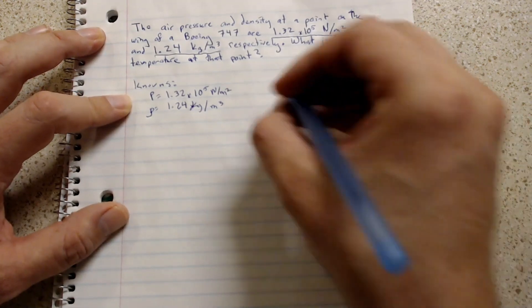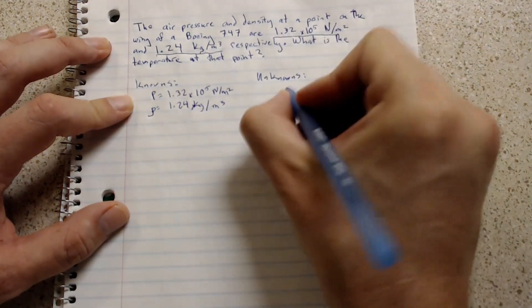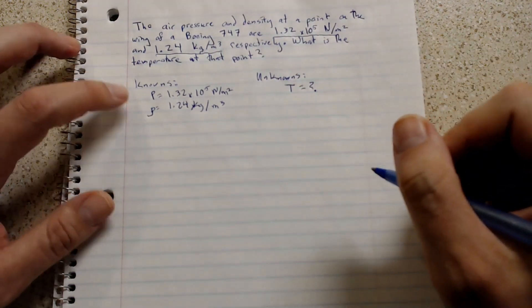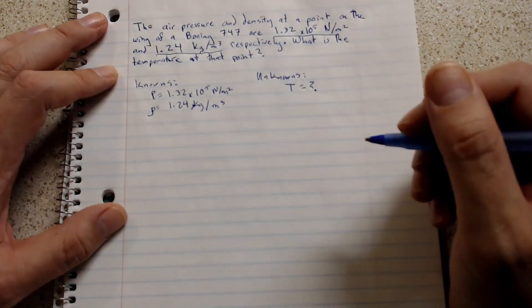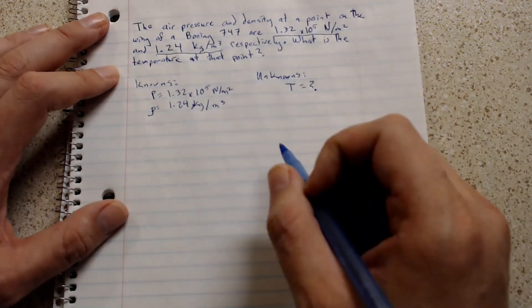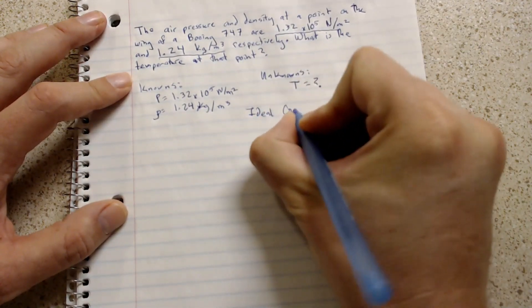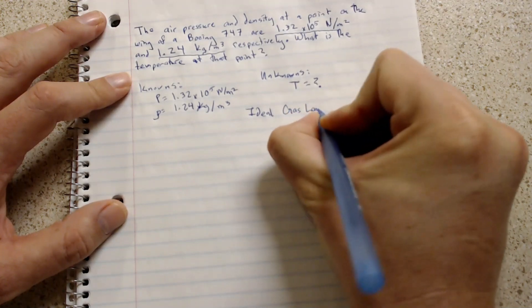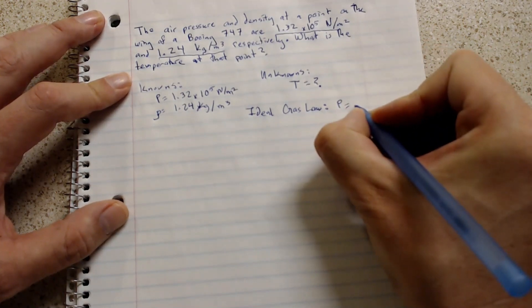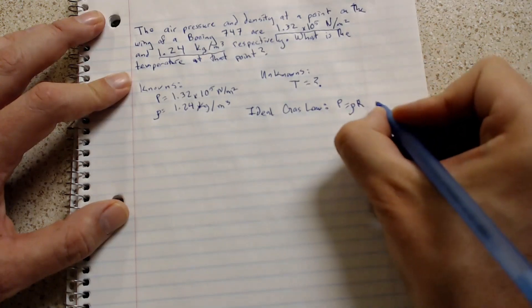Now for the unknowns of the equation. The unknown that we have is temperature. We're not quite sure what the temperature is. Now the laws that we use when talking about air properties is called the ideal gas law. Let's write down what is the ideal gas law. The ideal gas law is pressure is equal to the density of the air times the gas constant times temperature.